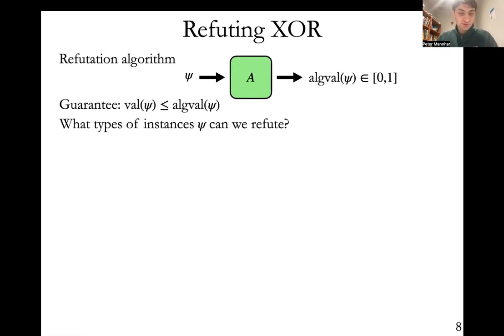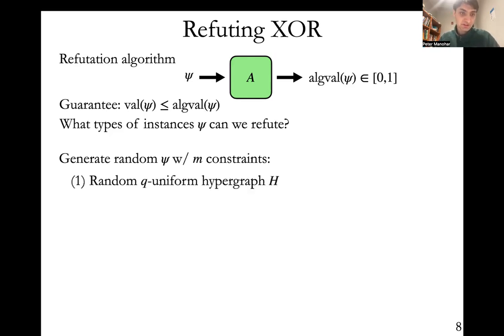If you're trying to figure out what types of instances you can refute, it might be a good first step to try out random instances. You can generate a random psi with m constraints in the following way. You just pick a random q-uniform hypergraph H, and then you choose random right-hand sides b_c, these are bits, for each constraint in the hypergraph. And then your equations in the instance are simply sum over j in c, x_j should be equal to b_c.